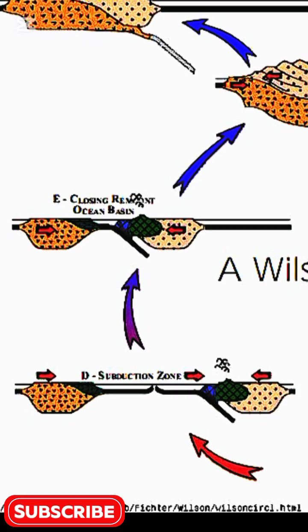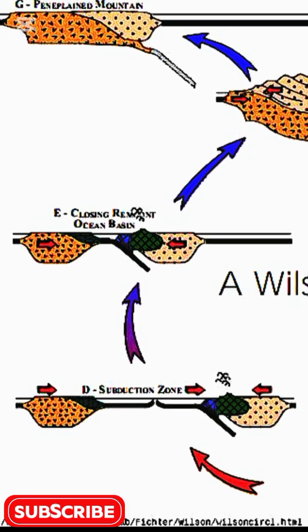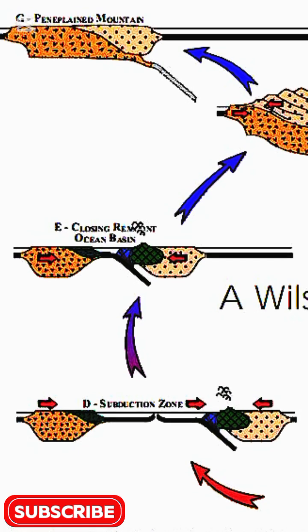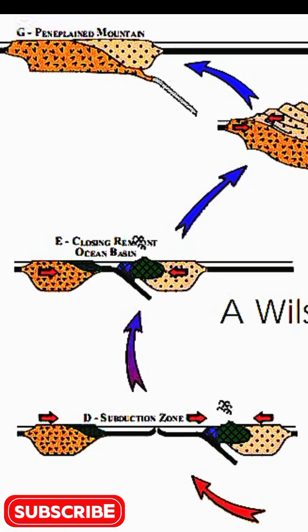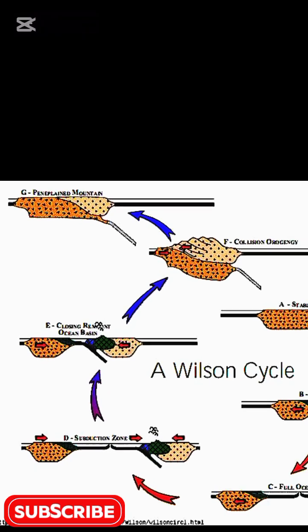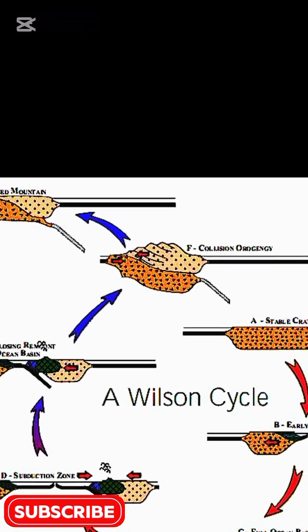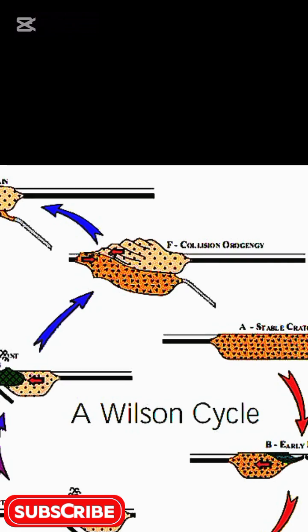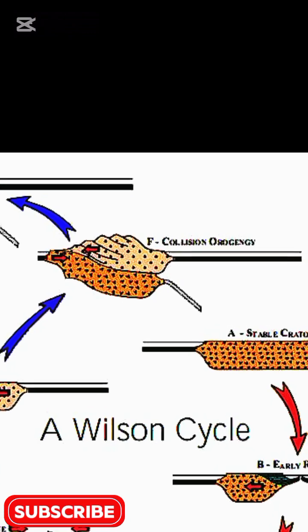From stage D to stage E, continental collision builds towering mountains like the Himalayas, still rising as the Indian plate collides with the Eurasian plate.